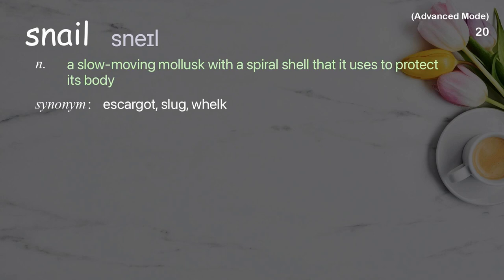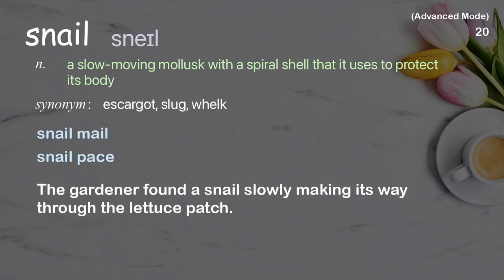Snail. A slow-moving mollusk with a spiral shell that it uses to protect its body. Examples: snail mail, snail pace. The gardener found a snail slowly making its way through the lettuce patch.